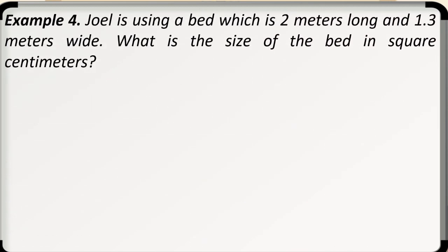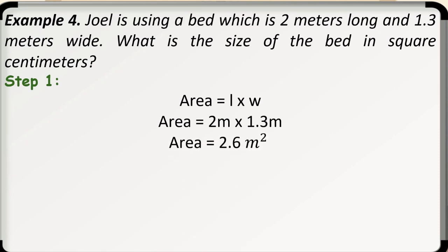Example number 4. Joel is using a bed which is 2 meters long and 1.3 meters wide. What is the size of the bed in square centimeters? Step 1. We need to find the area and the formula for area is length times width. Substituting our values, we have 2 meters times 1.3 meters. Therefore, our area is 2.6 square meters.